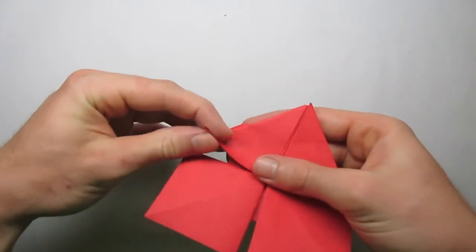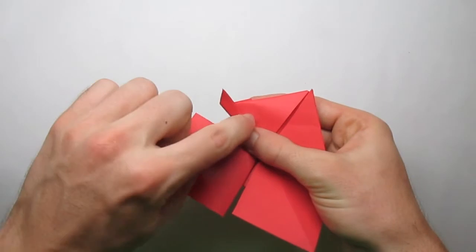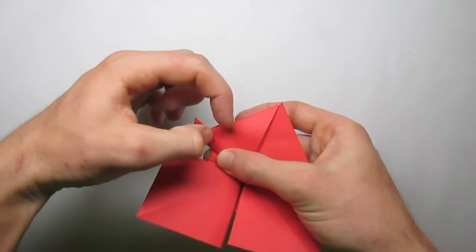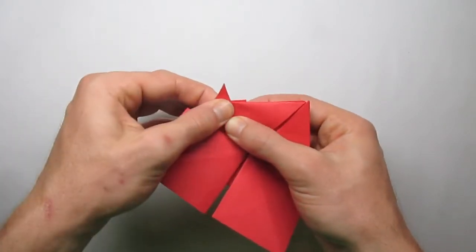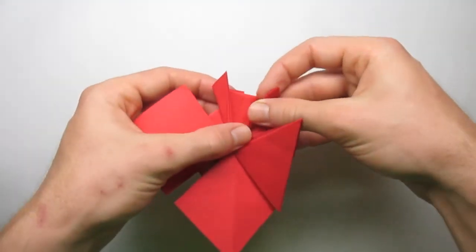Now take this point here and we're going to bring it over. And what you're going to do is, you see this middle crease here? Well, you want to have the leg about the same width as the space between that. So about like there. Do the same thing here. Bring it over.